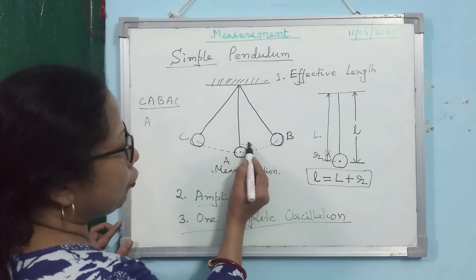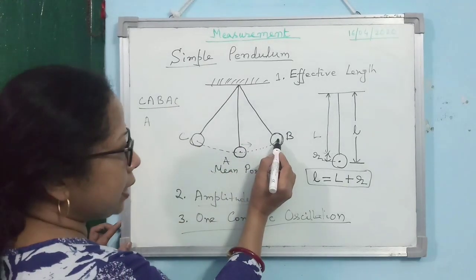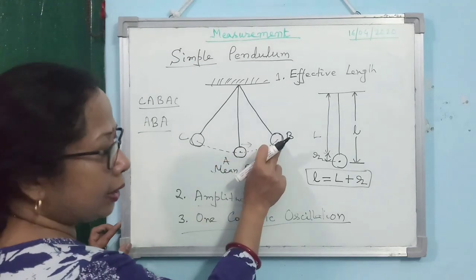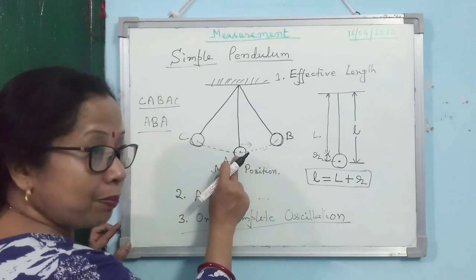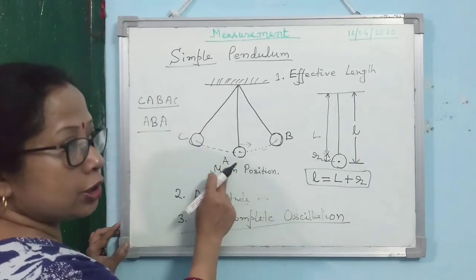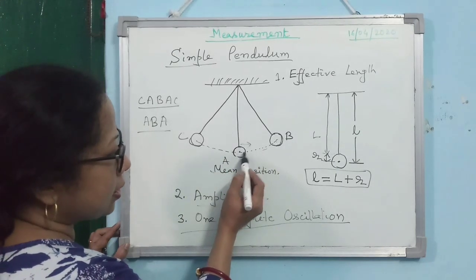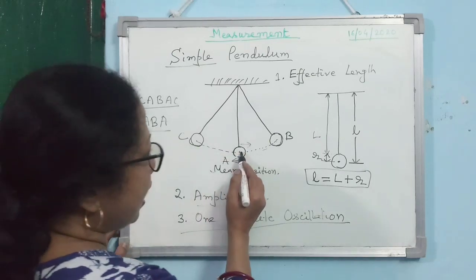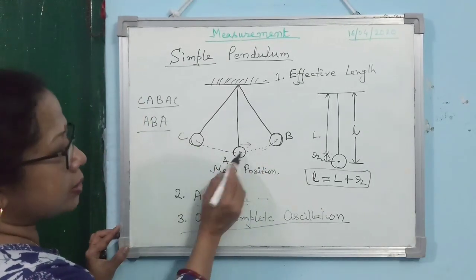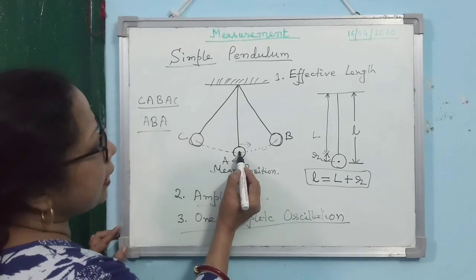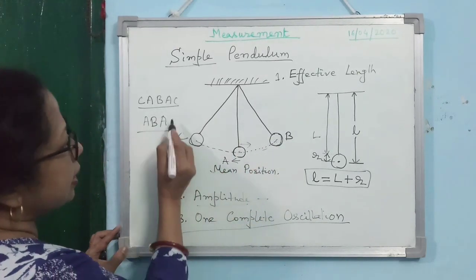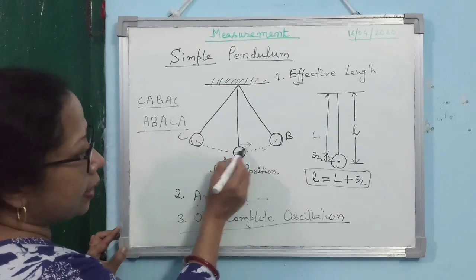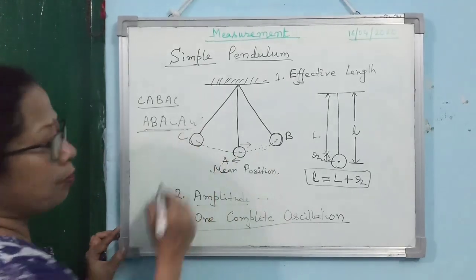Suppose the pendulum starts from A and moves toward B. It goes from A to B and then comes back to A. Is that a complete oscillation? No, because when it returns to A it is now moving in the opposite direction. For a complete oscillation, it must go A to B, back to A, then on to C, and back to A — at which point it is about to move in the same direction as it started.